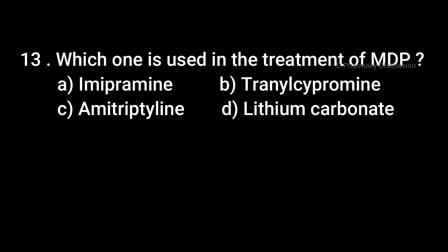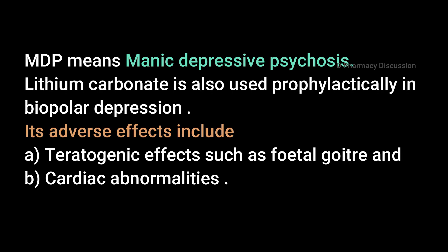Question 13: Which one is used in the treatment of MDP? Option A: Imipramine, B: Tranylcypromine, C: Amitriptyline, D: Lithium Carbonate. Correct answer is Option D: Lithium Carbonate. MDP means manic depressive psychosis. Lithium Carbonate is also used prophylactically in bipolar depression, and its adverse effects include teratogenic effects such as fetal goiter and cardiac abnormalities.